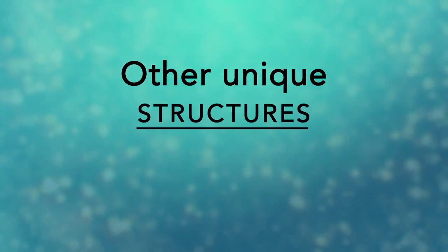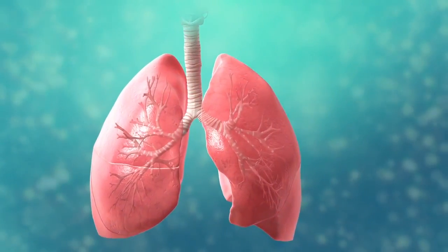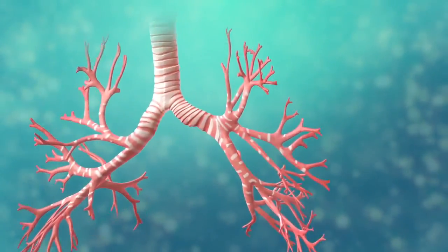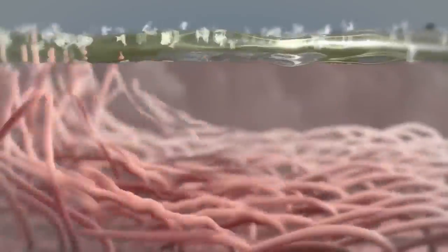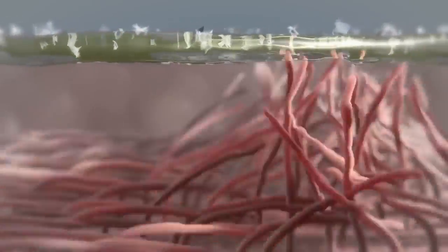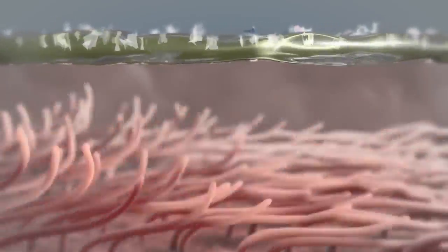There are many other unique structures that only some cells have. Here are just a few. In humans, for example, the respiratory tract is lined with cells that have cilia. These are microscopic hair-like projections that can move in waves. This feature helps trap inhaled particles in the air and expels them when you cough.